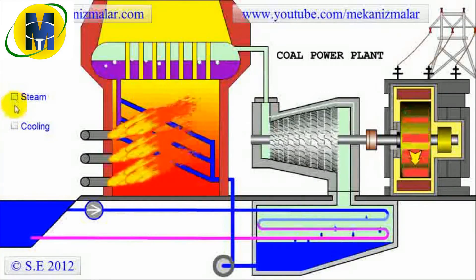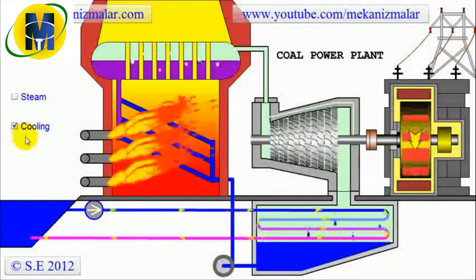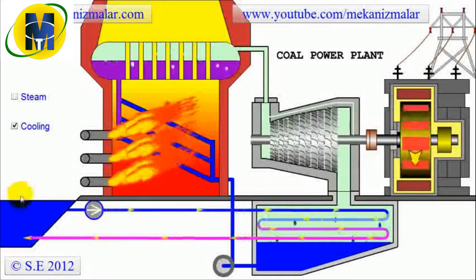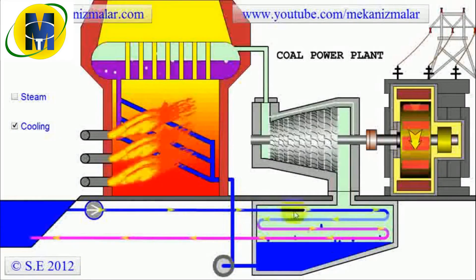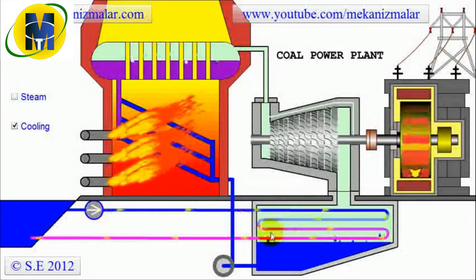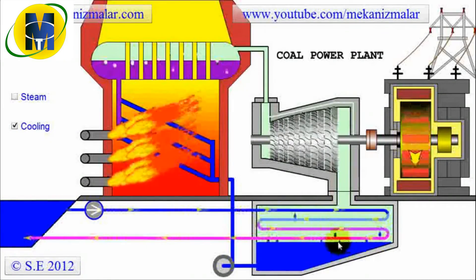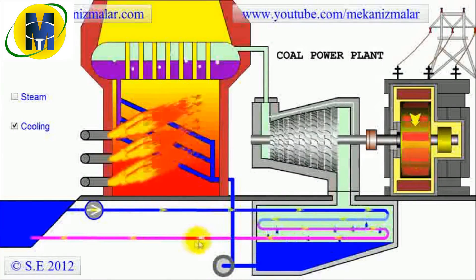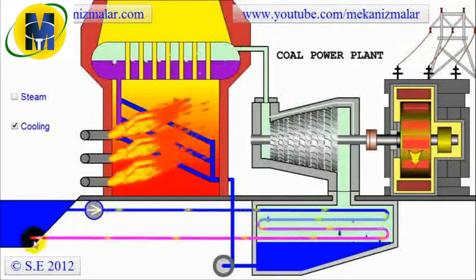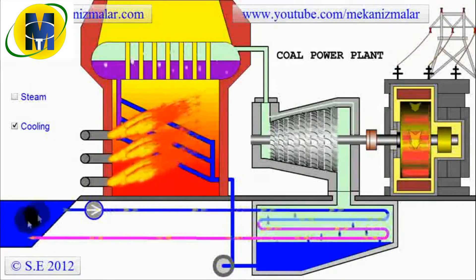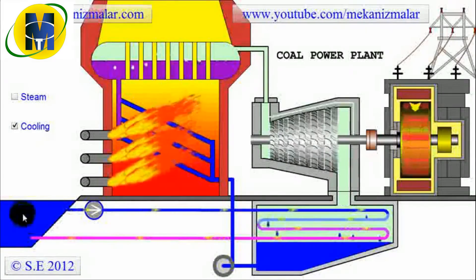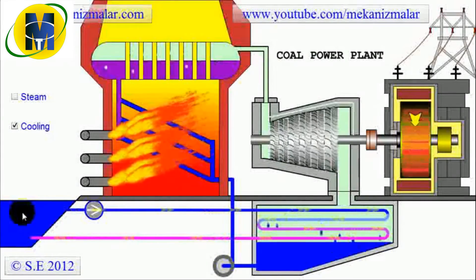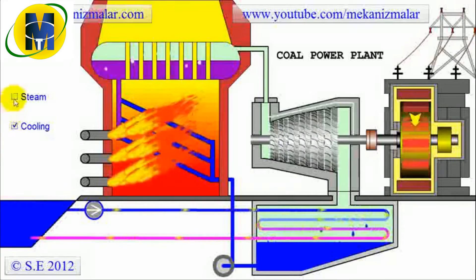Now let's discuss the second cycle, the open loop cooling cycle, which starts by pumping cold water from the upstream section of the river into the condenser inside the steel tubes. While saturated steam is condensed to water, the water from the river is heated. The heated water is then dispensed to the downstream section of the river. To protect ecological stability of the river, the temperature rise should be kept to a minimum.